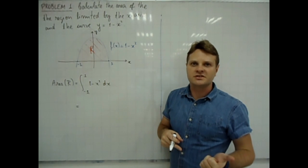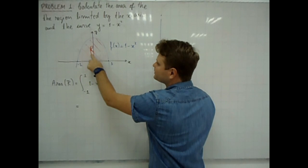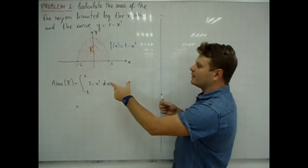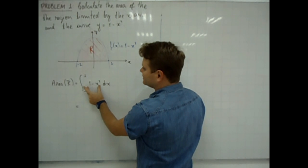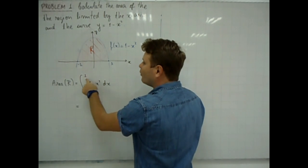So, the region we are interested in is colored here in red and denoted by capital R. We have just learned that the area of capital R is given by the definite integral of 1 minus x squared on the interval minus 1 to 1.